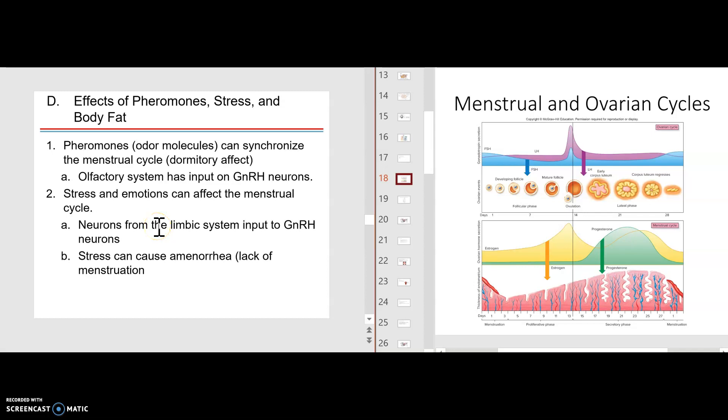Class, we want to bring up another subject now in this female reproductive physiology, and that is introducing pheromones. Pheromones are odor molecules produced. They've been seen in animals of various types, and pheromones can synchronize the menstrual period. So here's the situation.